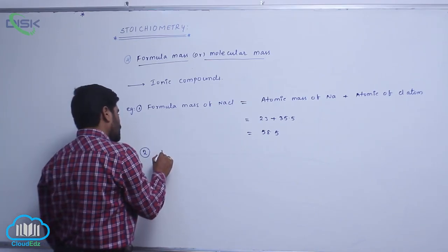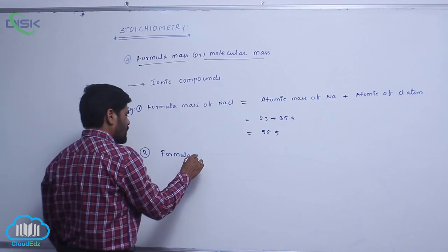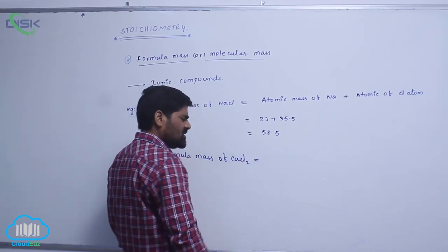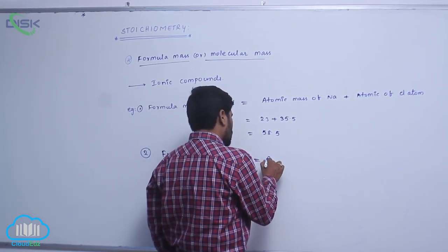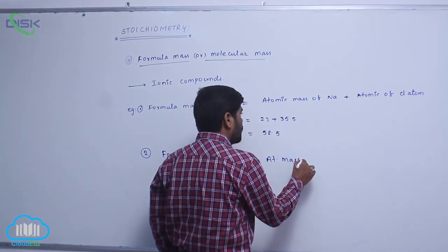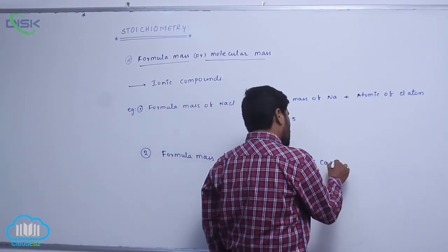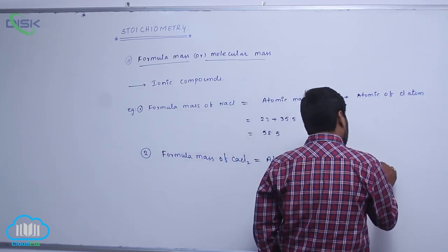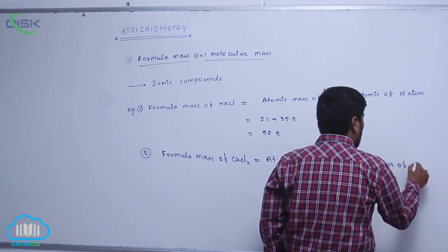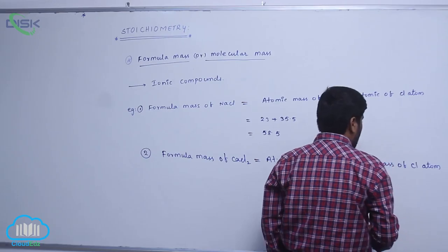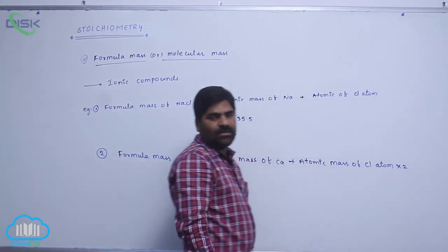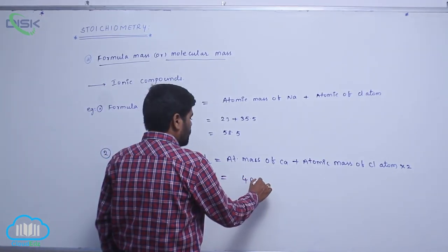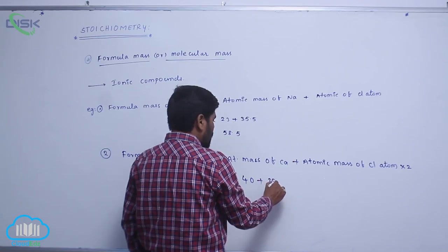For example, second example: formula mass of calcium chloride. It is also an ionic compound. Therefore, atomic mass of calcium plus atomic mass of chlorine atom into number of chlorine atoms. Calcium is 40, 35.5 into 2.